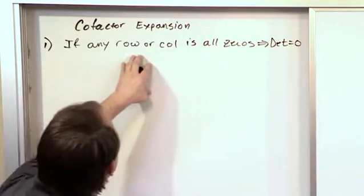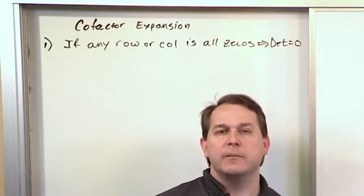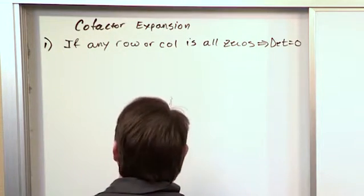If I write it like this, if any row or column is all zeros then the determinant equals zero, you might file it away and say okay, great, but you may not think much about it. Like, why? Well, let me show you real quick. I'll give you a quick example and then you'll probably remember it.